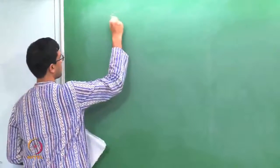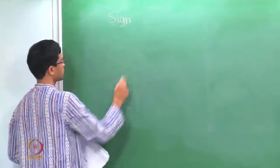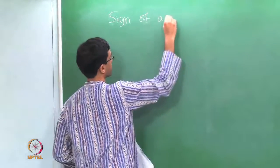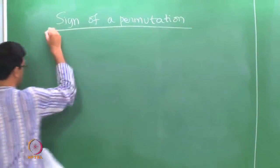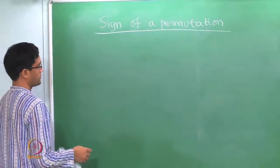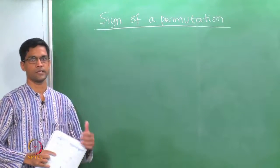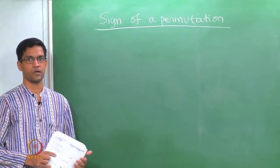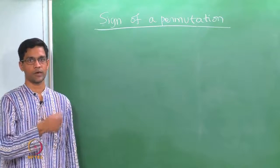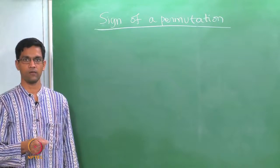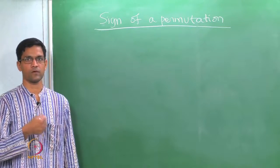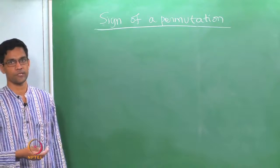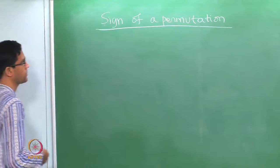Welcome back. Last time we talked about signs of permutations. This was defined by first taking the number of crossings of the permutation, which can be read off pictorially from the crossing diagram or tangle. If the number of crossings is even, the sign is plus 1; if odd, the sign is minus 1. These are also called even and odd permutations respectively.